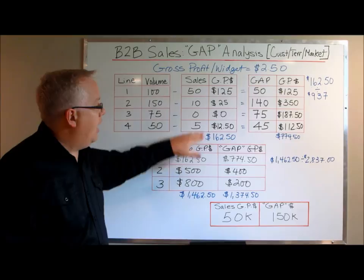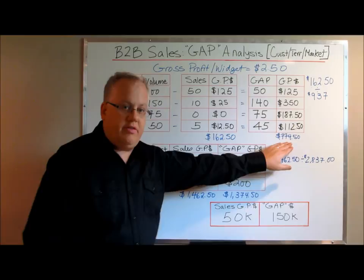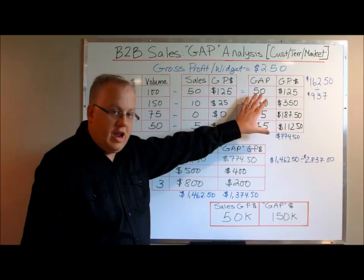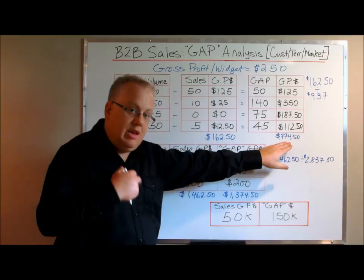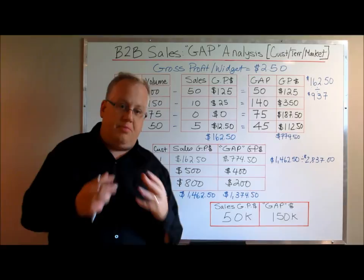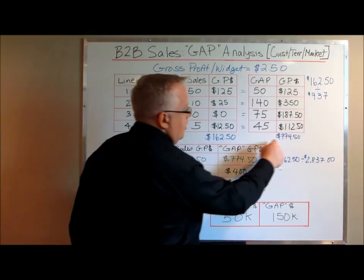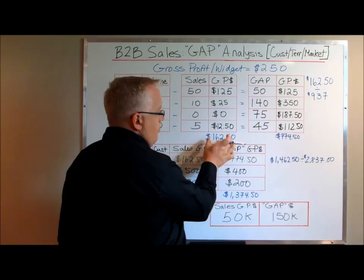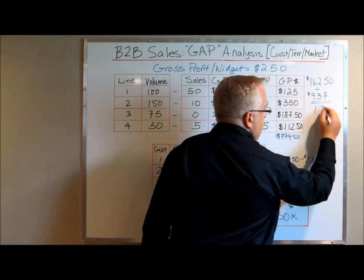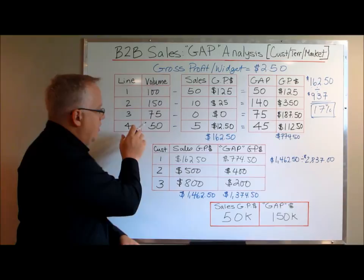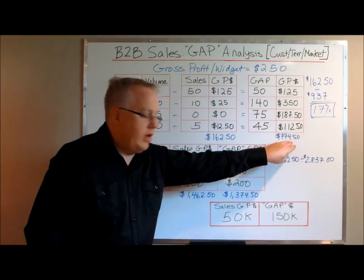I've defined the business that I have now by gross profit and totaled it up — it's $162.50. This is what remains to be pursued; this is my gap. I've done it for every single model that the OEM makes, and this is what's left for me to pursue with this customer. If I wanted to understand how much business I have at this account, I take $162.50 plus $774, which is $937, and my current sales of $162.50 divided by $937 is 17 percent.